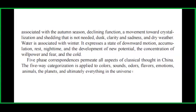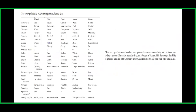Five phase correspondences permeate all aspects of classical thought in China. The five-way categorization is applied to colors, sounds, odors, flavors, emotions, animals, the planets, and ultimately everything in the universe. Looking at the five phase correspondences: hun corresponds to a number of actions equivalent to unconscious activity and is also related to deep sleep. Shen is the mental activity, the substrate of thought. Yi is thought, the ability to generate ideas. Po is vegetative activity and automatism. And Zhi is the will and perseverance.